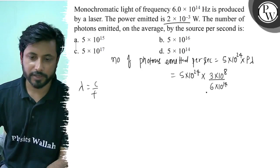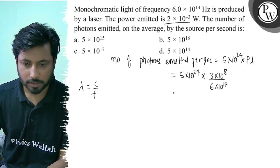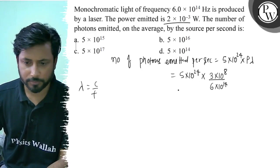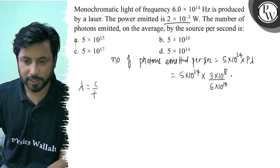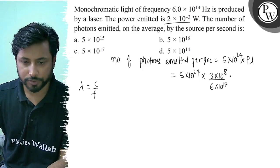When we solve this, we get 5 × 10 to the power 24. Our power is 2 × 10^-3 watts.